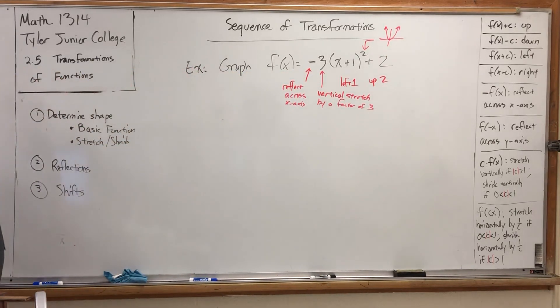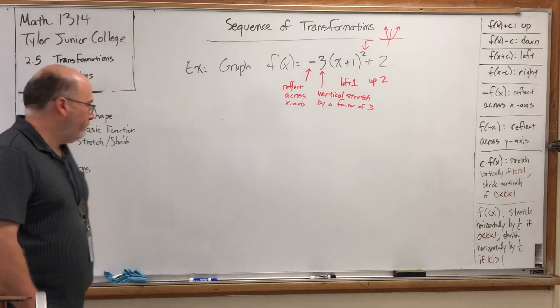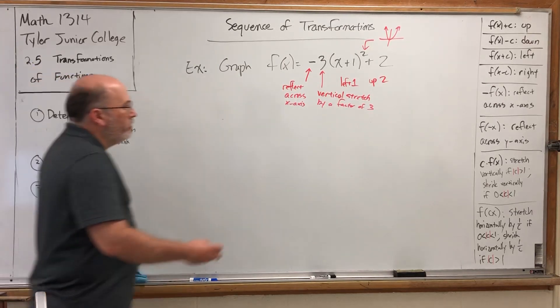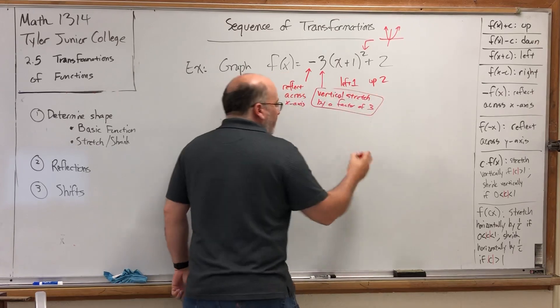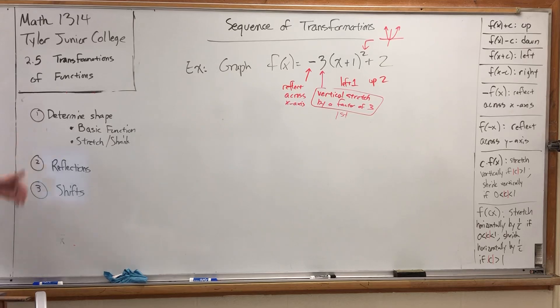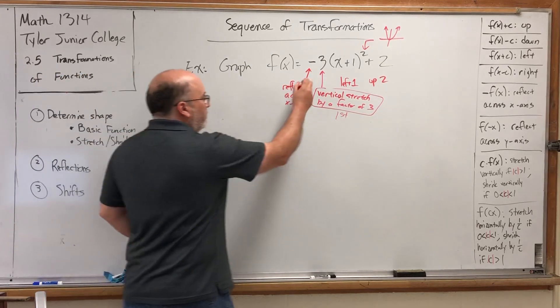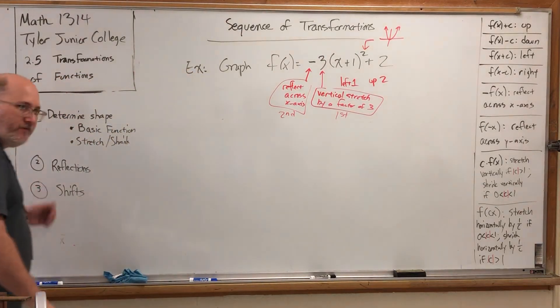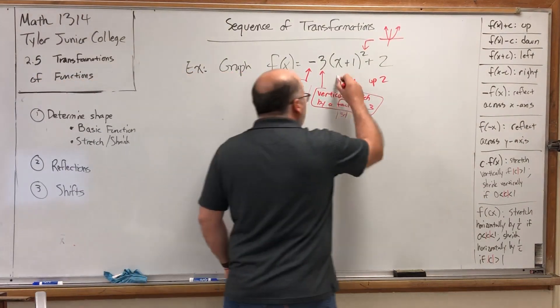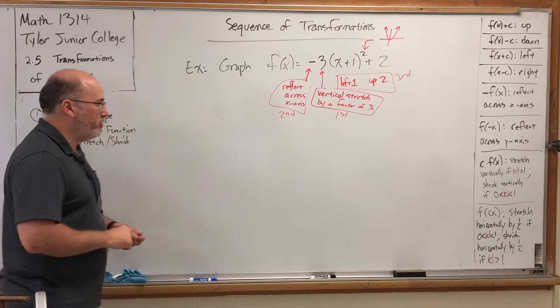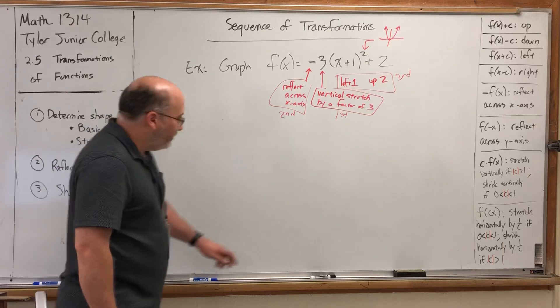So let's list the order in which we'll do these transformations. We have four of them: a reflection, a stretch, and two moves. First, we have to determine the shape in any stretches, so this stretching will occur first. After any stretching, we move to reflections, so the reflection will occur second. And then any shifts. So the shifts collectively will occur third. And we've already talked about combining vertical and horizontal shifts.